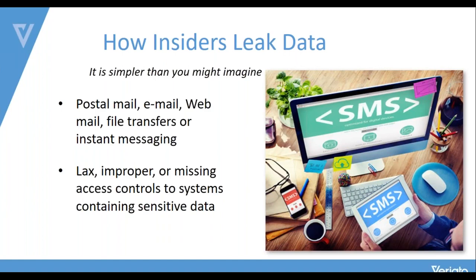Snowden wouldn't have been caught through email transfer — he downloaded approximately 1.7 million files onto a USB stick. But somebody should have noticed why he was downloading that much information at once and why he had access to it in the first place. This leads to lacks, improper, or missing access controls on systems containing sensitive data. We have to apply least privilege and need-to-know principles, but I need some way of being alerted that there's a problem — I have to recognize that a problem exists before I can act.